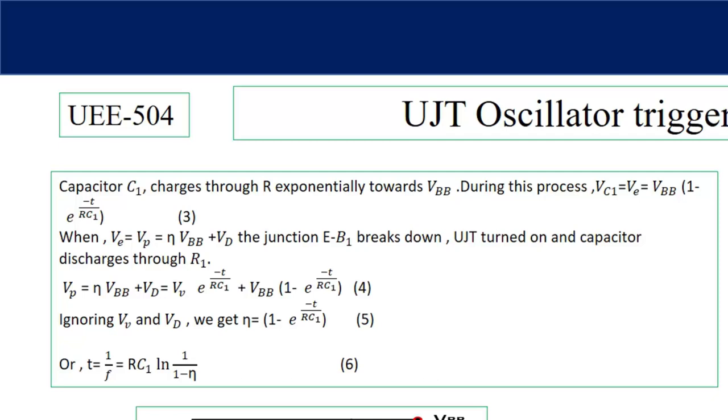Now from equation number 4, as VV is very low and voltage drop across diode VD, we are considering 0.3 to 0.7 volt. These two voltages VV and VD can be ignored and finally we get η = 1 - e^(-T/RC1). Taking log on both sides and solving this equation number 5, we can write T = RC1 log(1/(1-η)).